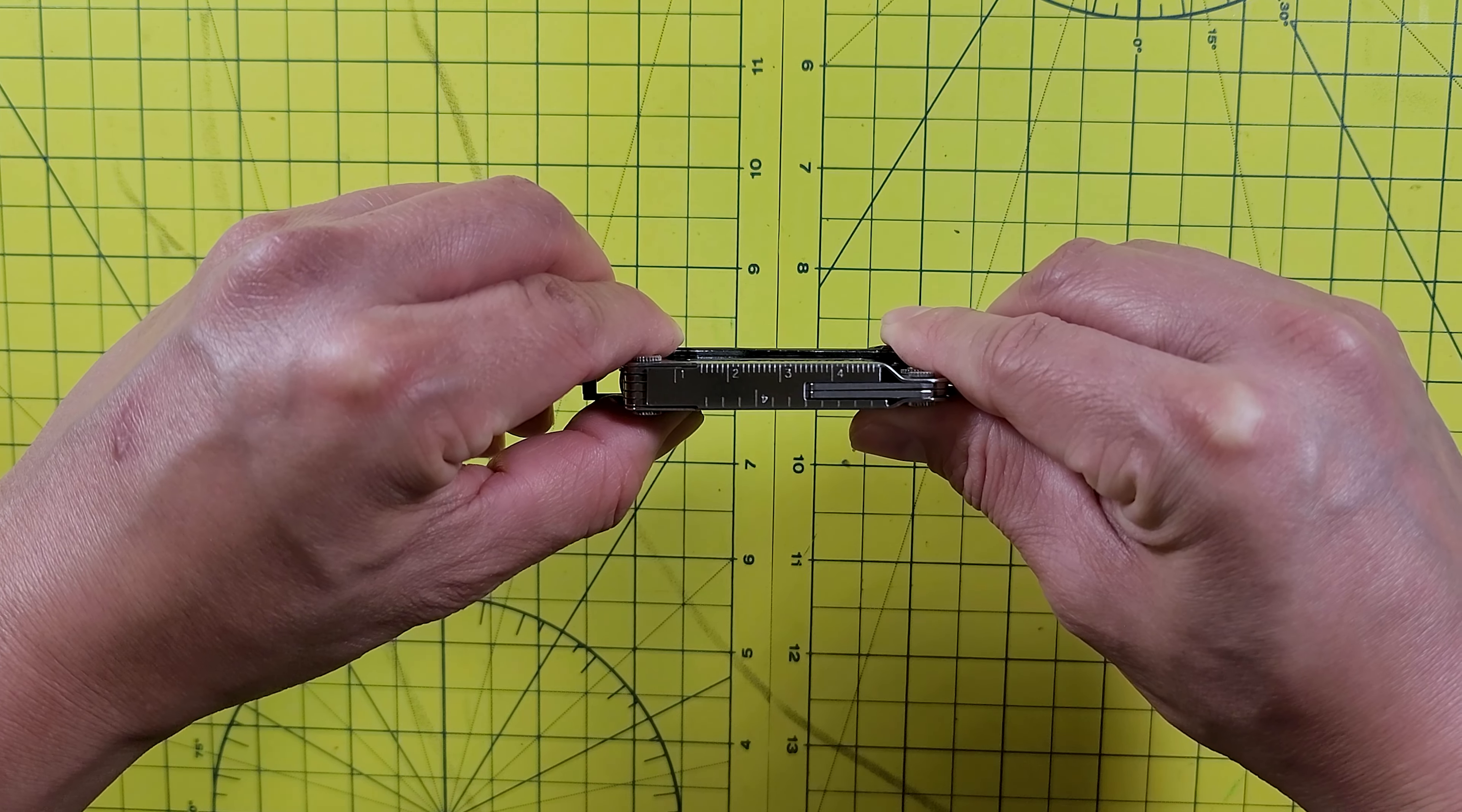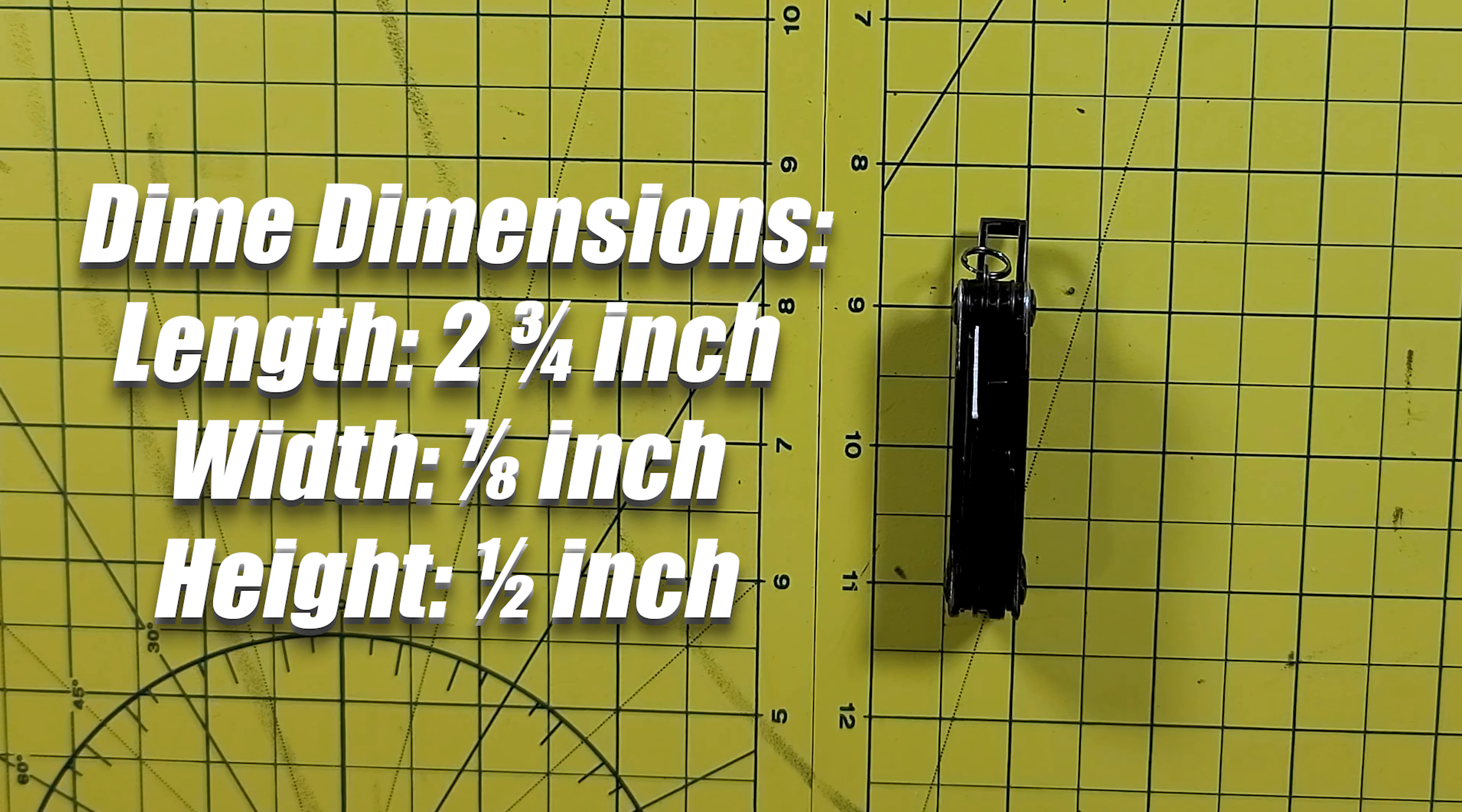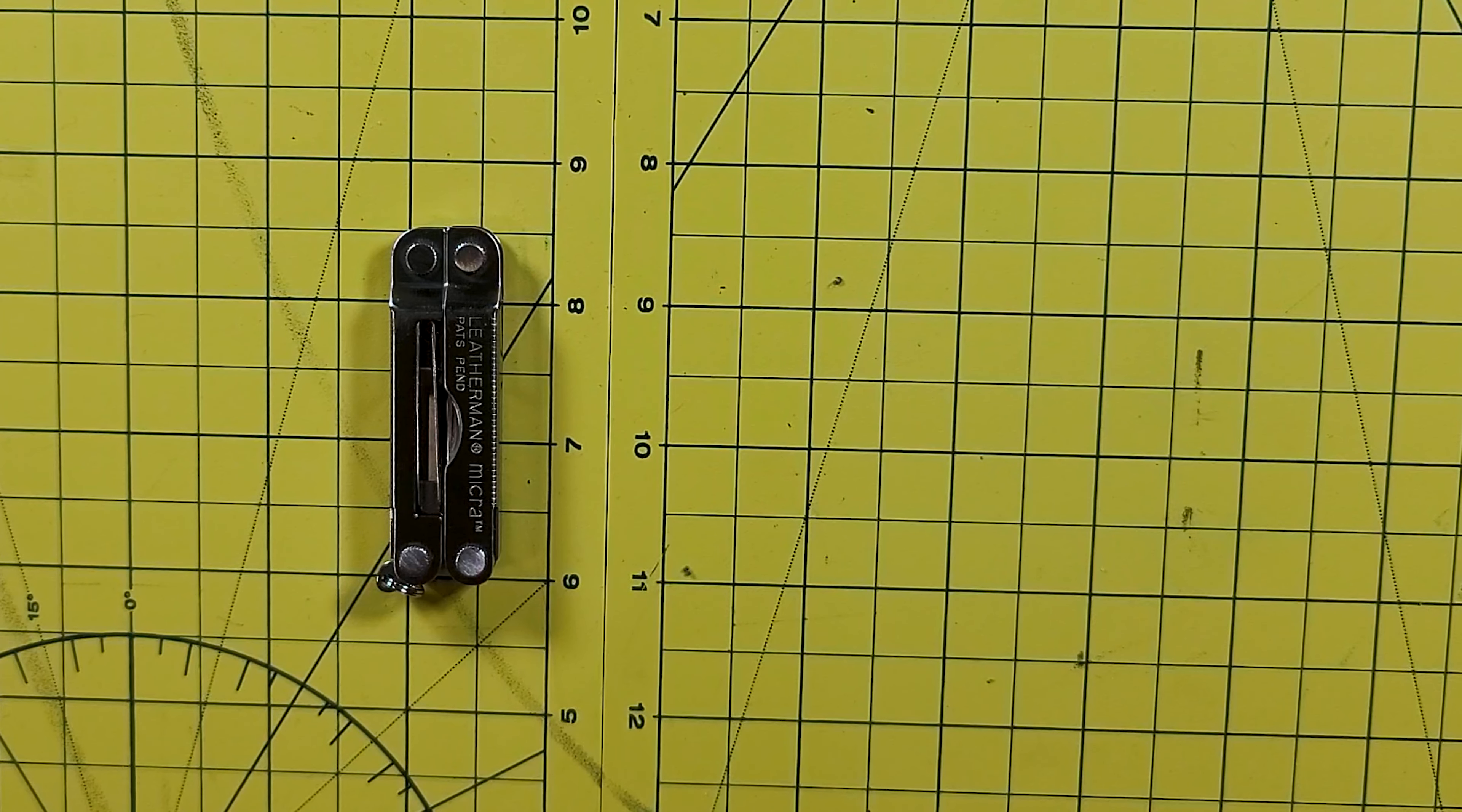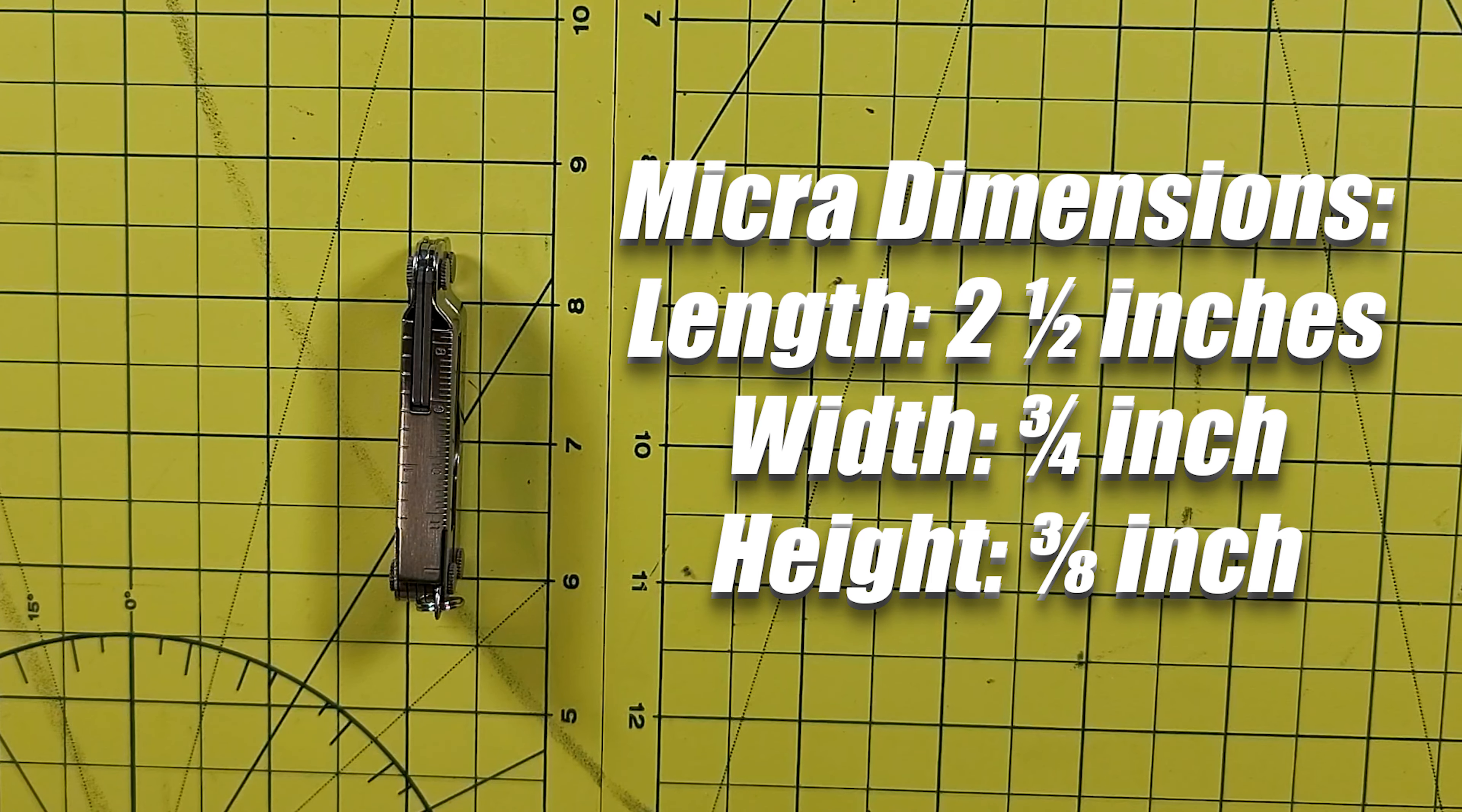Now let's take a look at the dimensions. For the Dime, the dimensions are: length, two and three quarters of an inch; width, seven eighths of an inch; height, half an inch. The dimensions of the Micro are: length, two and a half inches; width, three quarters of an inch; and height, three eighths of an inch.